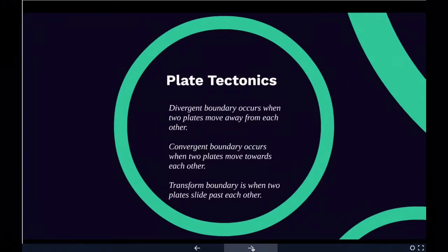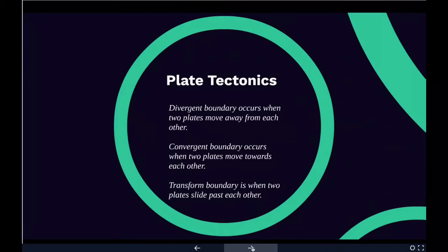In terms of plate tectonics, the lithosphere — the rigid outermost shell of a planet, made up of the crust and the upper mantle — is broken into tectonic plates. Earth's lithosphere is composed of seven or eight major plates, depending on how they are defined, and many minor plates. Where the plates meet, their relative motion determines the type of boundary.